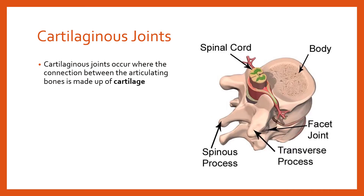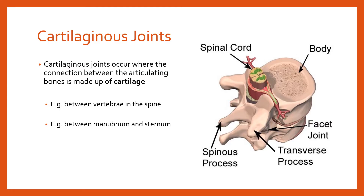A cartilaginous joint, as the name suggests, is a joint where the connection between the articulating bones — the technical word for touching bones — is made of cartilage. A great example is the vertebrae in the spine. Another example is between the manubrium and the sternum, part of the breastbone. Also at the front of the pubic bone, the pubic symphysis, where the two halves of the pelvis meet — held together with a cartilaginous joint with a little bit of movement, but not very much.